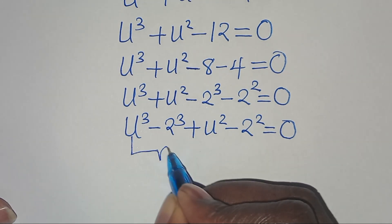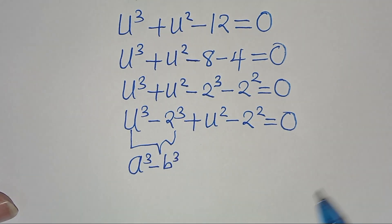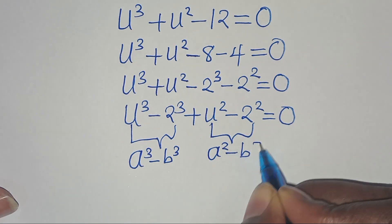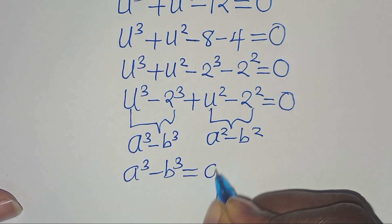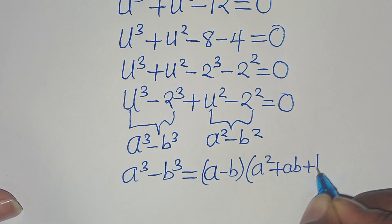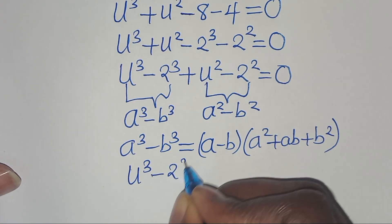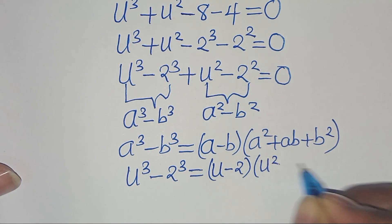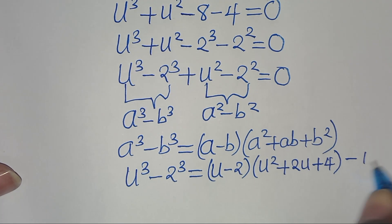The first part is the difference of two cubes. Using the identity a³ - b³ = (a - b)(a² + ab + b²), we have u³ - 2³ = (u - 2)(u² + 2u + 4). Let's call this equation 1.